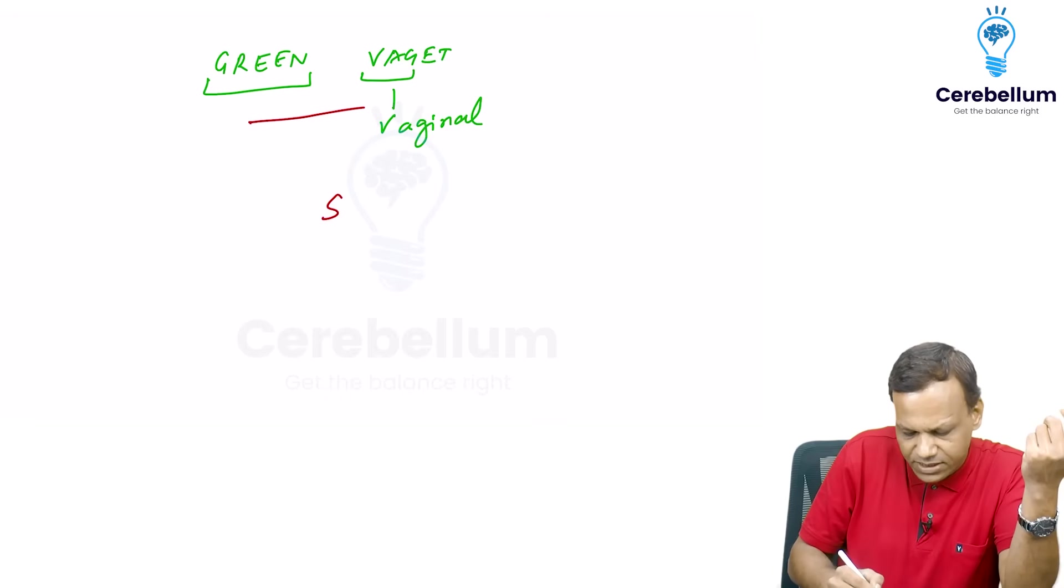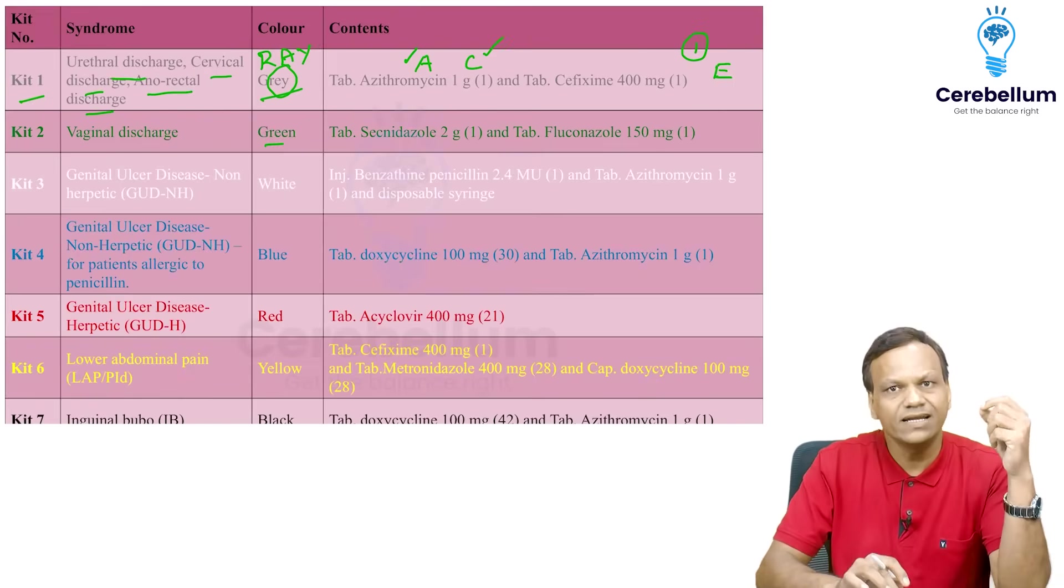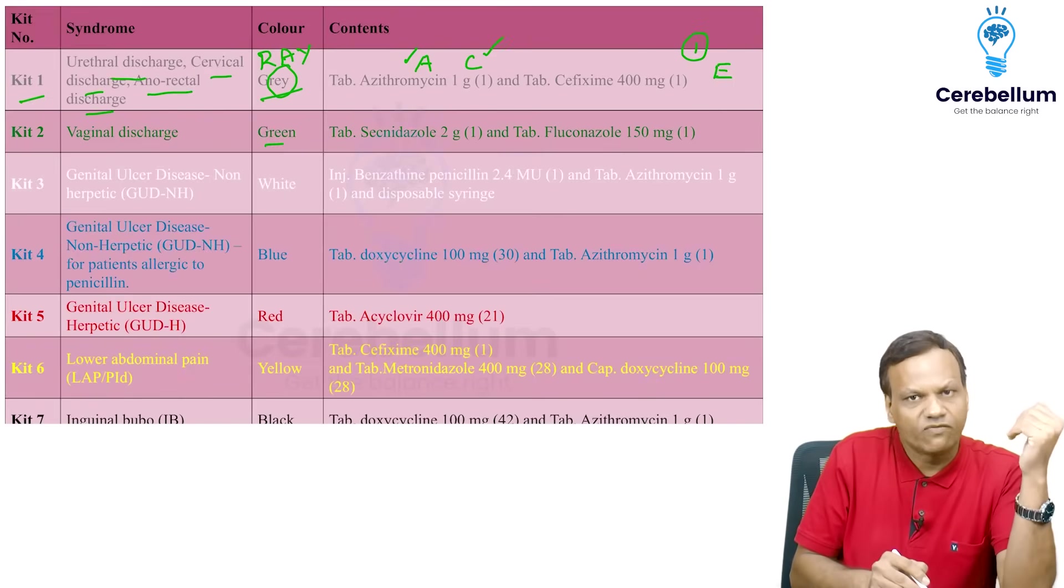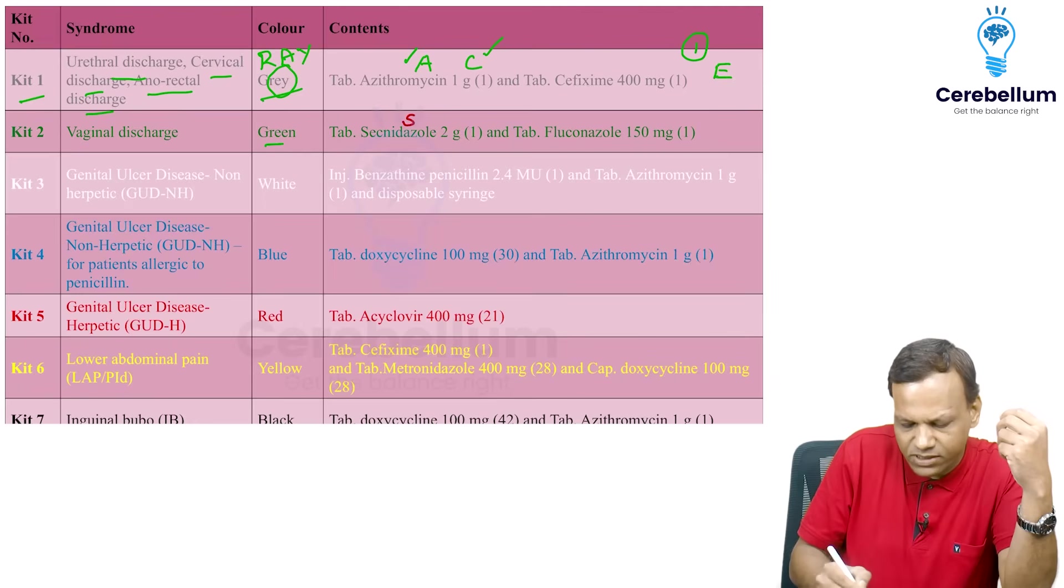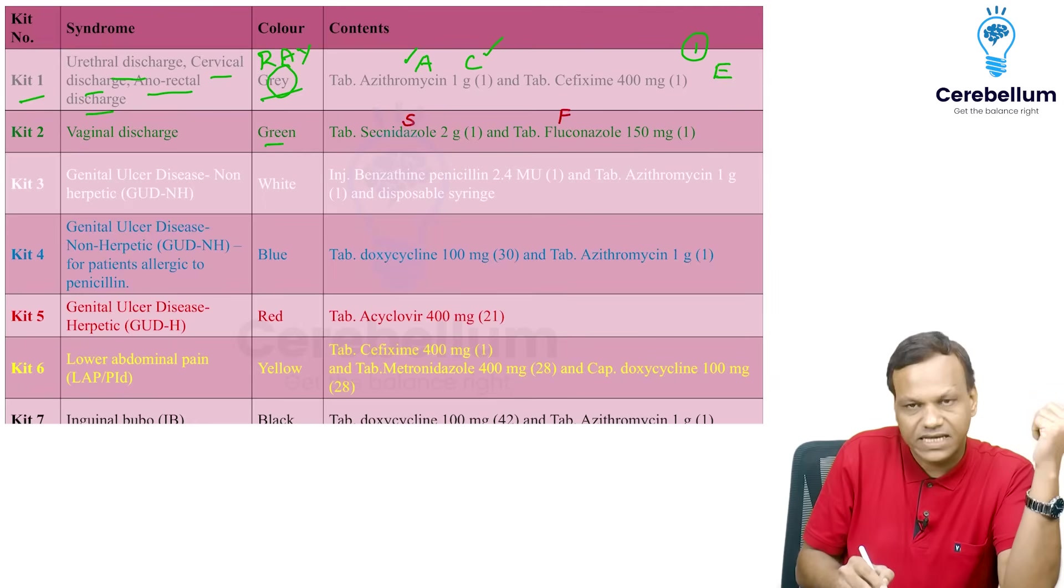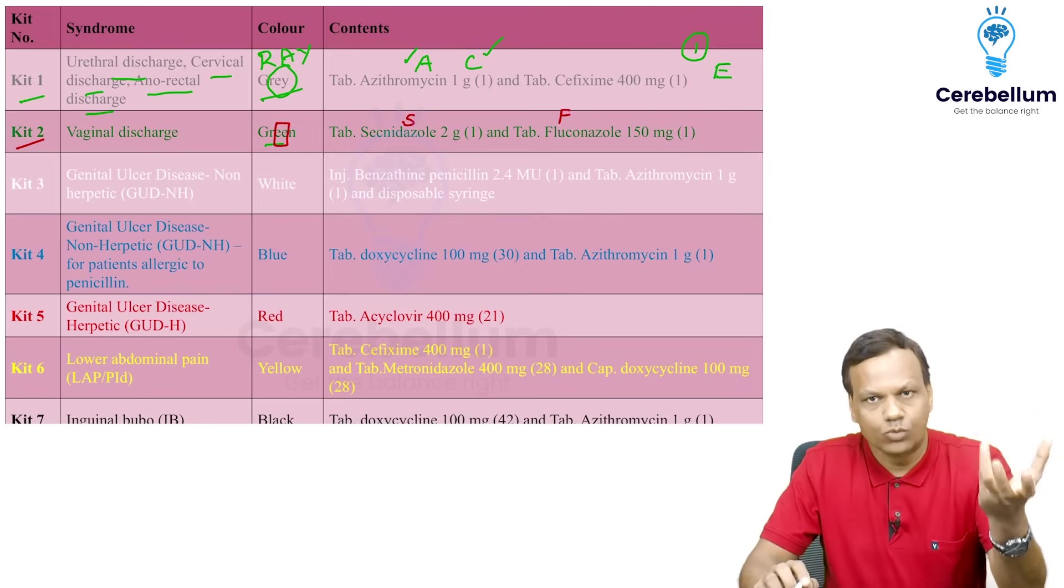So you can remember it is a safe food. Safe food means S means it contains secnidazole, A for azithromycin and F for fluconazole. So you can remember green is for vaginal discharge, green vegetables. So it is safe food. That means secnidazole and fluconazole. And green contains two E's, so 2E means it is kit 2.